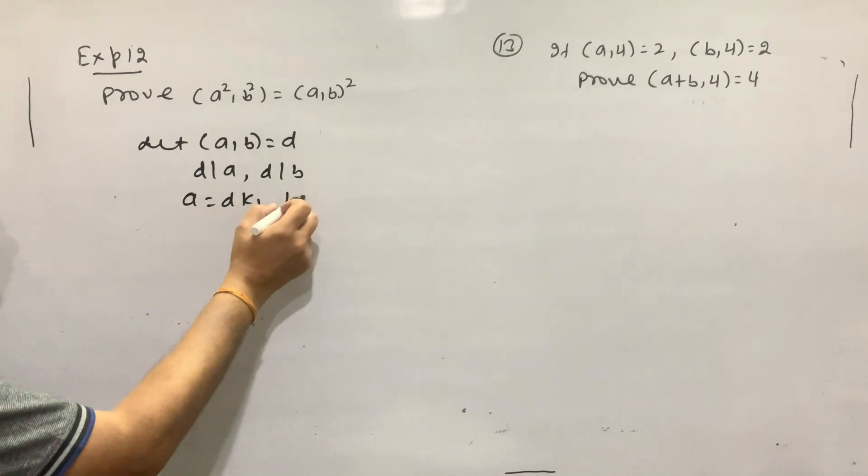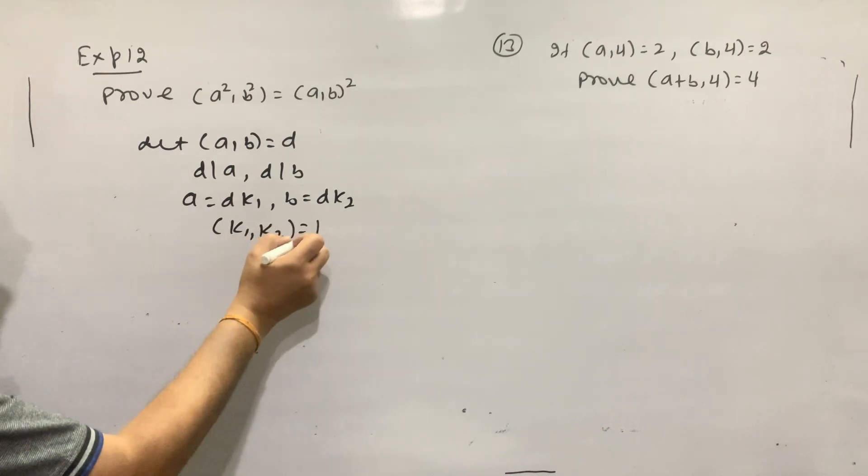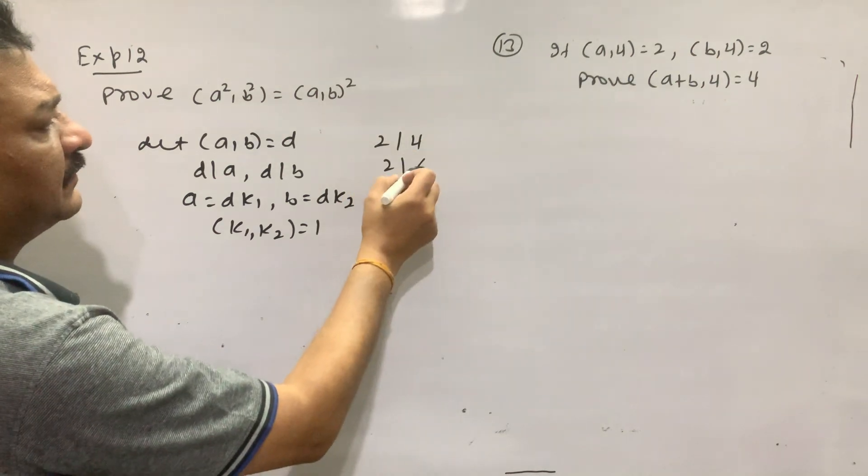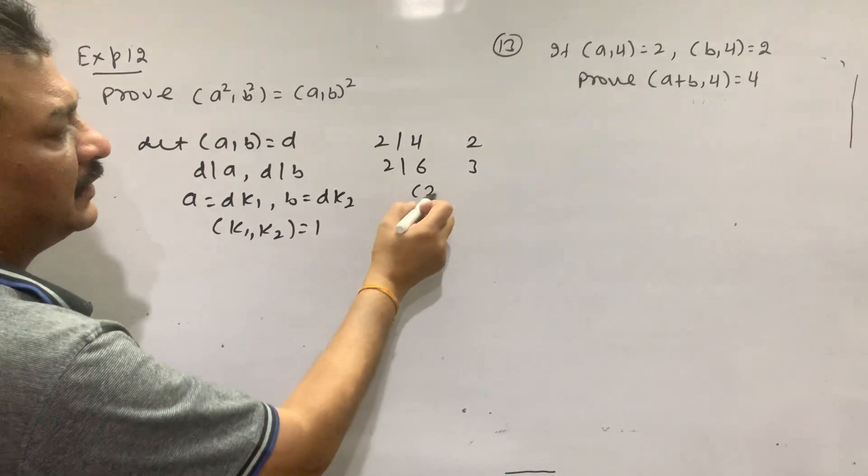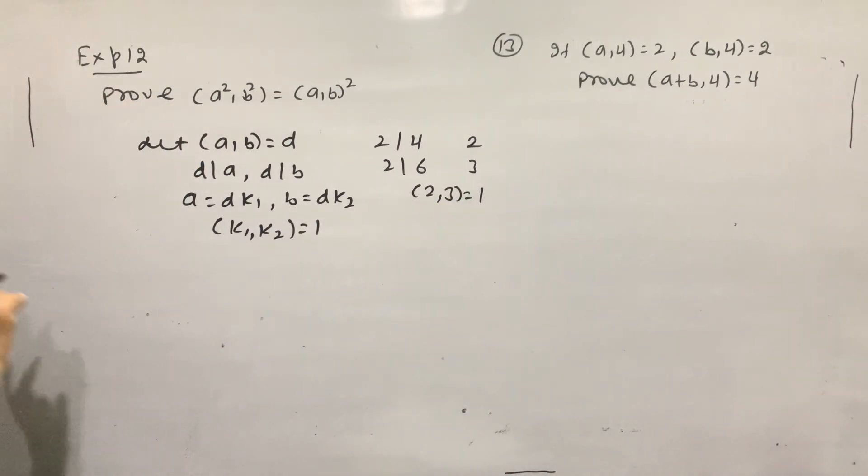B is equal to D times K2. And K1 and K2 is equal to 1. For example, 2 divides 4, 2 divides 6, where 2 divides 2, 3 and K2. Then K1 and K2 is equal to 1.